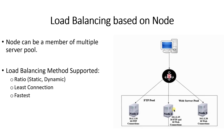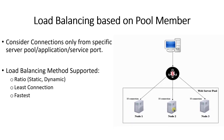The load balancing methods supported for node-based load balancing are ratio static and dynamic, least connection, and fastest. The next is load balancing based on pool member. When you select load balancing based on pool member, it considers only connections from a specific server pool application or a service port. So node one, node two, and node three each show 10 connections. Load balancing methods supported are ratio based load balancing static and dynamic, least connection, and fastest.